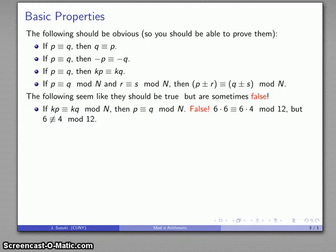For example, 6 × 6 = 36 is congruent to 6 × 4 = 24 mod 12, but I can't drop that common factor of 6 because if I do, I falsely claim 6 ≡ 4 mod 12, and that's simply not true.